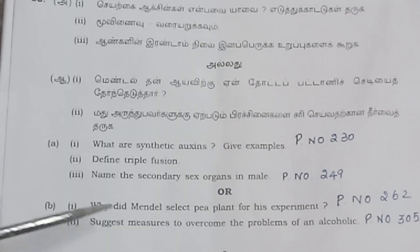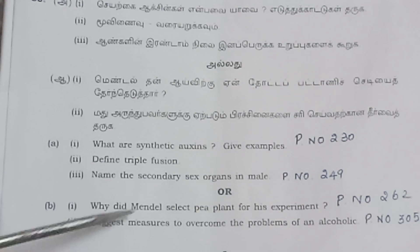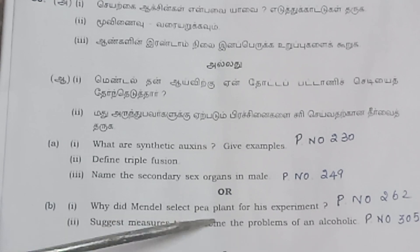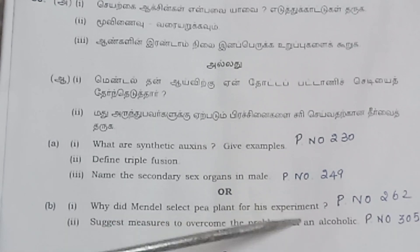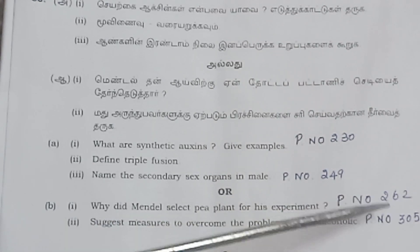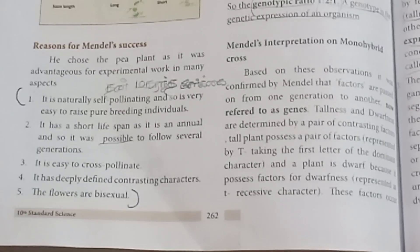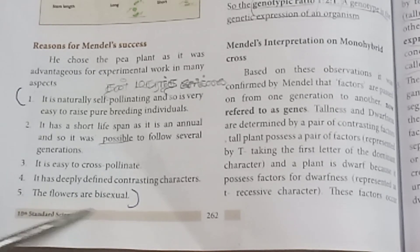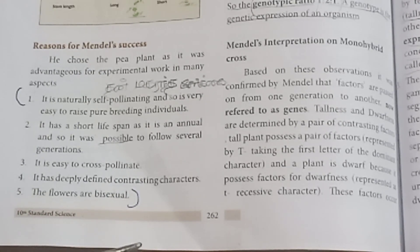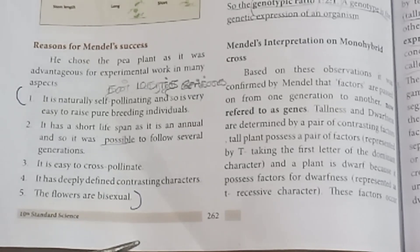Question 35B first part: Why did Mendel select the pea plant for his experiment? Refer to page number 262. The pea plant is naturally self-pollinating and its flowers are bisexual.